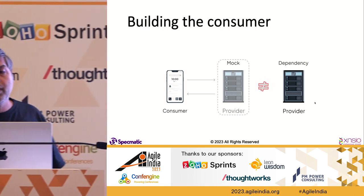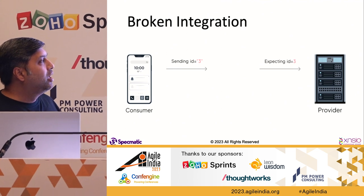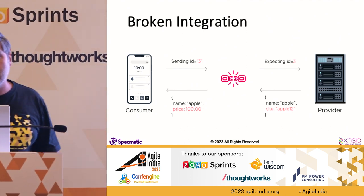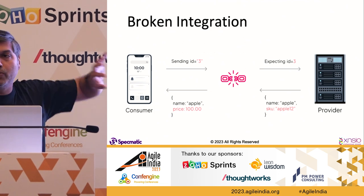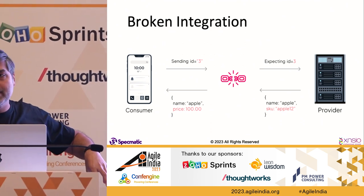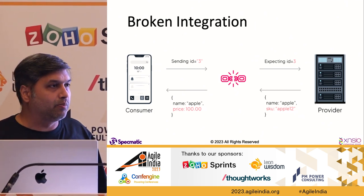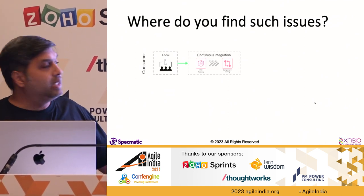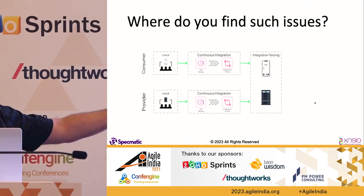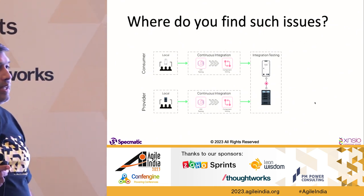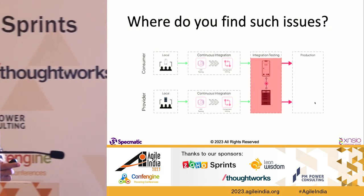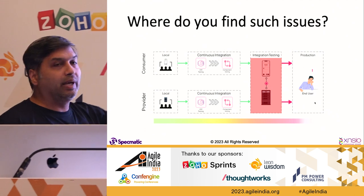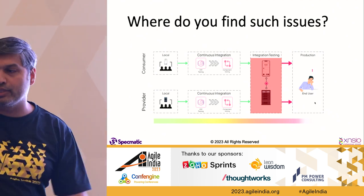Everything works fine locally but then there's a mismatch, and you only discover something is broken when both services come to the integration environment. That's when the path forward gets blocked — and it's very expensive, the later you find it. We want to catch this as early as possible, ideally on a developer's laptop before even hitting CI. That's the kind of problem contract-driven development addresses.